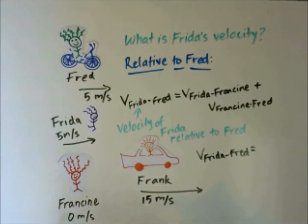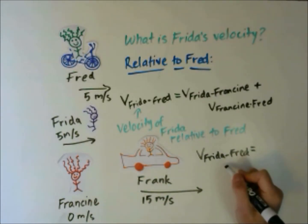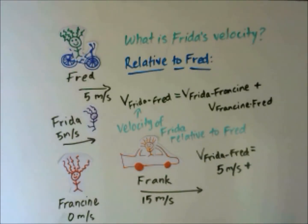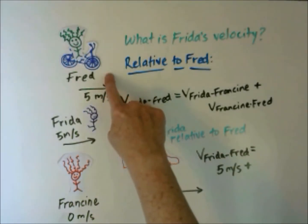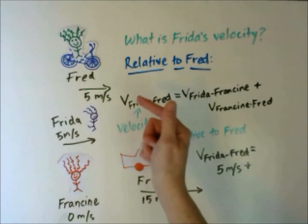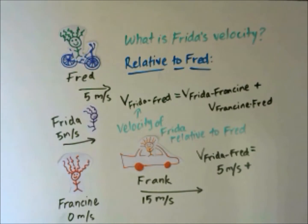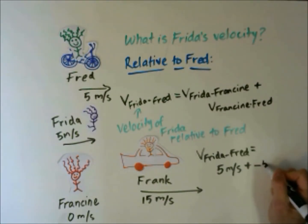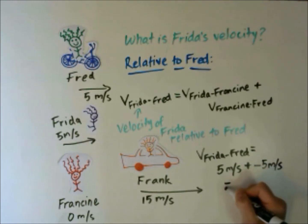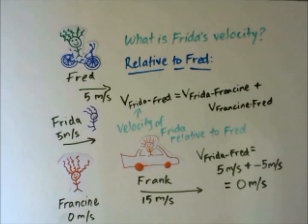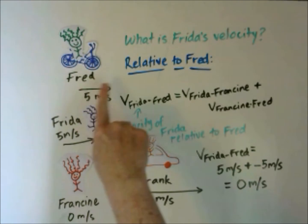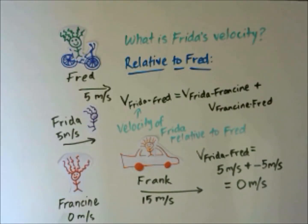So what is the velocity of Frida relative to Francine? It's 5 meters per second. And what is the velocity of Francine relative to Fred? Fred is moving at 5 meters per second, so from his perspective he sees Francine moving backward at negative 5 meters per second. This gives us a velocity of 0 meters per second, and that makes sense — Fred and Frida are both traveling at 5 meters per second, so if Fred looked over at Frida, she would appear to not be moving.